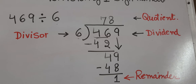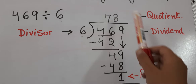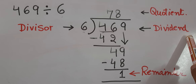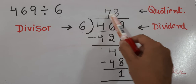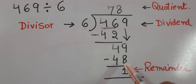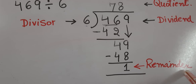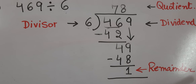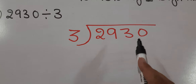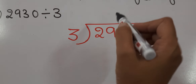To summarize the terms: the number by which we are dividing is known as the divisor; the number which we are dividing is the dividend; the answer we get at the end is known as the quotient; and if any number is left undivided, it is known as the remainder.